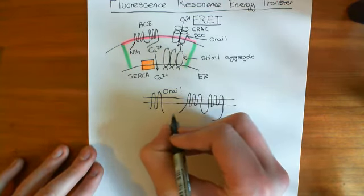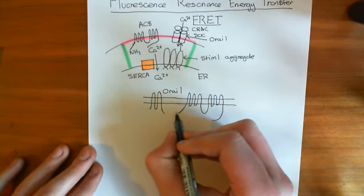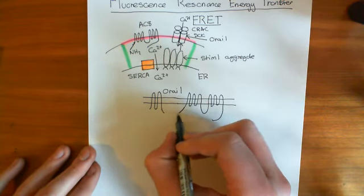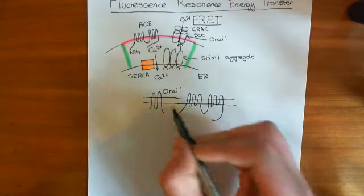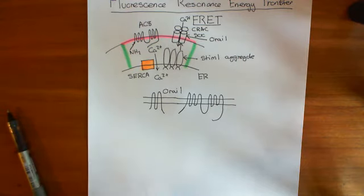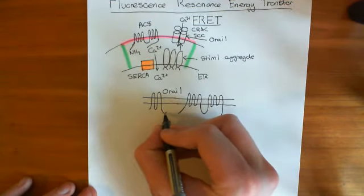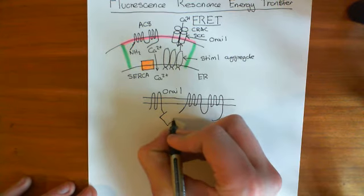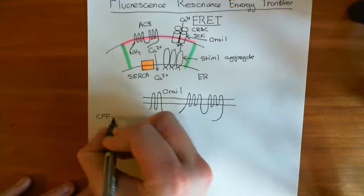The carboxyl terminal of ORAI1 links to the amino terminal of adenylyl cyclase 8 — the whole proteins interact in some way. And the way you can show that they interact is using fluorescence resonance energy transfer. The principle is that you attach onto the ORAI1 protein a fluorescent marker such as cyan fluorescent protein, CFP. When you shine a certain frequency of UV light onto that fluorescent protein, it will radiate blue light back out at you.